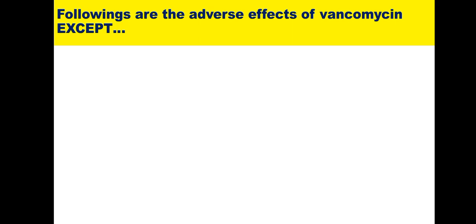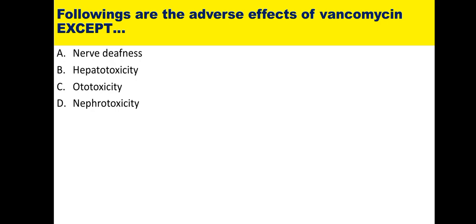Eighth: the following are adverse effects of vancomycin. Vancomycin is a cell wall synthesis inhibitor and the drug of choice for MRSA (methicillin-resistant Staphylococcus aureus). It has a relatively narrow margin of safety and can cause concentration-dependent deafness. It is eliminated by the kidney, and like aminoglycosides, causes ototoxicity and nephrotoxicity. It also causes red man syndrome due to histamine release. It is not eliminated through the liver and does not cause hepatic damage, so the answer is hepatotoxicity.